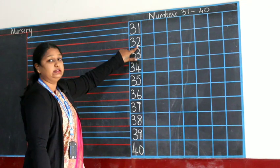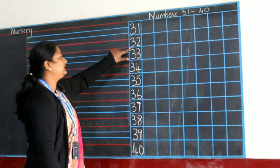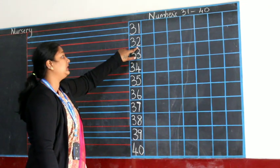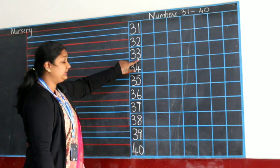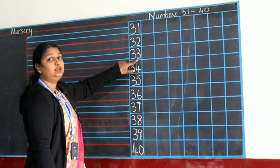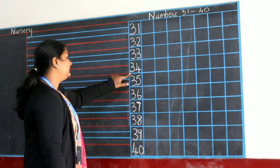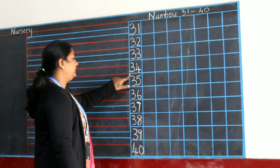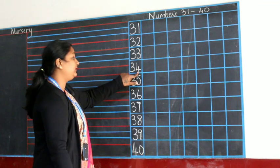3, 2, 32. 3, 2, 32. 3, 3, 33. 3, 3, 33. 3, 4, 34. 3, 4, 34.